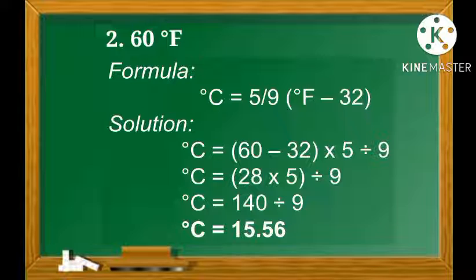Number 2: Convert 60 degrees Fahrenheit to degrees Celsius using the formula °C = (5/9) × (°F − 32). Applying GEMDAS, solve inside the parenthesis first: 60 − 32 = 28. Then 28 × 5 = 140, divided by 9 = 15.56. Therefore, 60 degrees Fahrenheit is equal to 15.56 degrees Celsius.